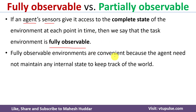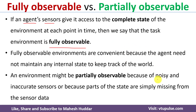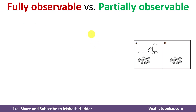Such environments are convenient because the agent need not maintain internal state to keep track of what has happened previously. However, because of a noisy environment, inaccurate sensors, or sensors that may not sense the complete environment, we may not be able to get complete information about the environment. Such a state is known as a partially observable environment.